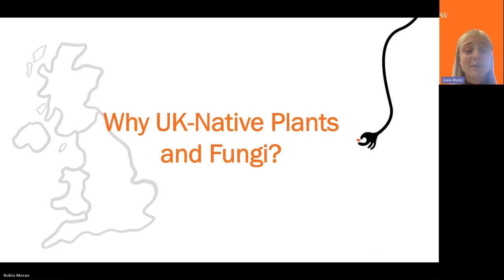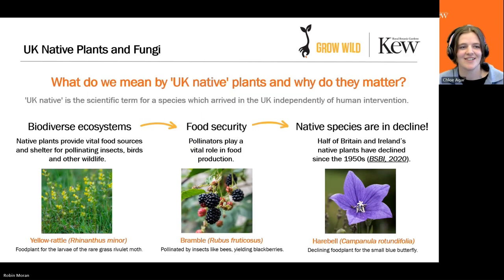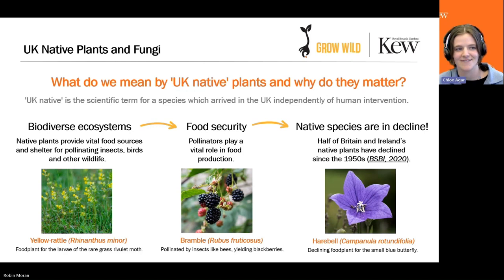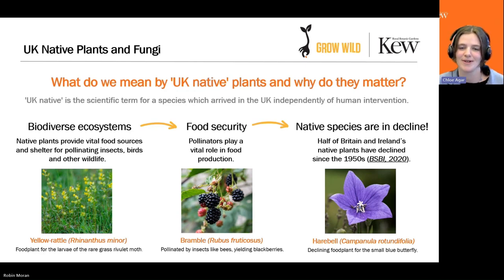Now a little about UK native plants and fungi. We're not expecting you to be experts already, but we want to share why we love them so much. 'UK native' is a scientific term for a species which has arrived in the UK independently of human intervention. These species are really important because they've co-evolved here for thousands of years with other native wildlife, creating the biodiverse ecosystems that we rely on. They provide vital food sources and shelter for pollinating insects, birds, and other wildlife. For example, yellow rattle is a native wildflower and the food plant for the larvae of the rare grass rivulet moth — lots of native species are food plants for rare pollinators.